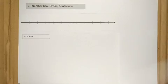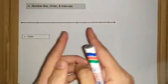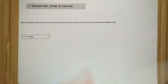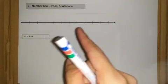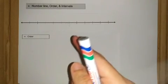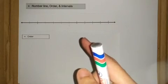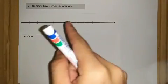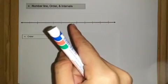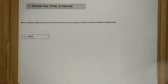So this straight line represents real numbers. And it contains all natural numbers, whole numbers, integers, rational numbers, and also irrational numbers. And each point on the line represents precisely one real number.